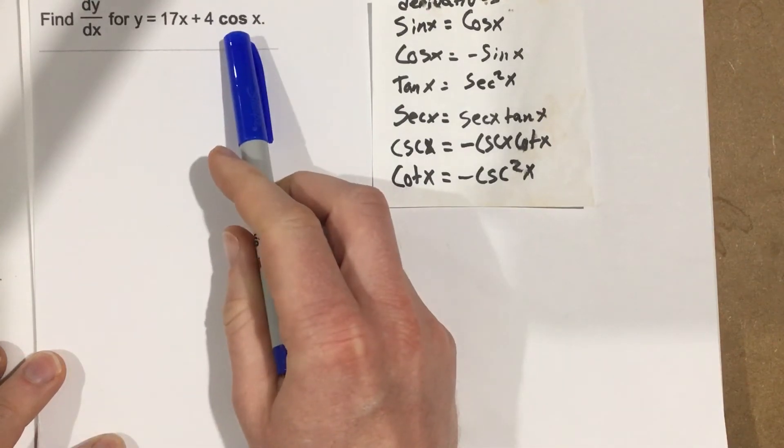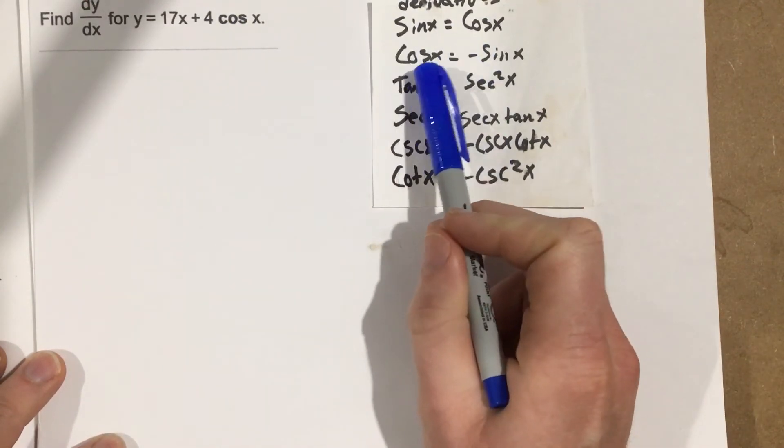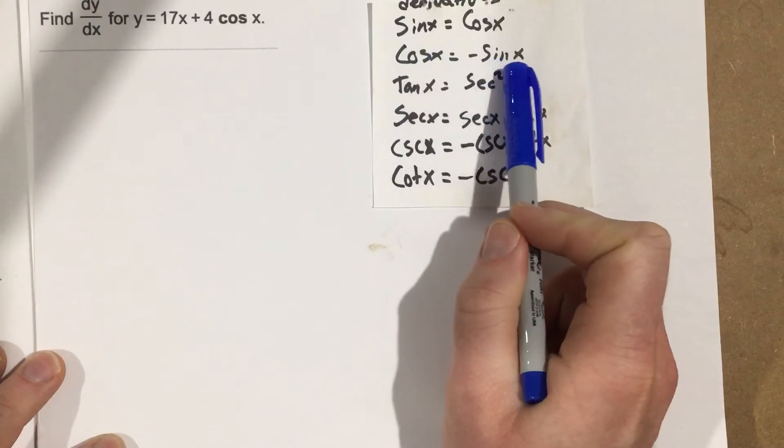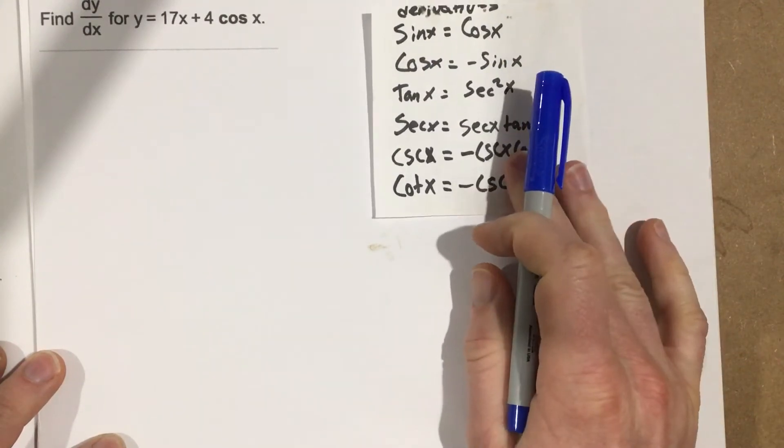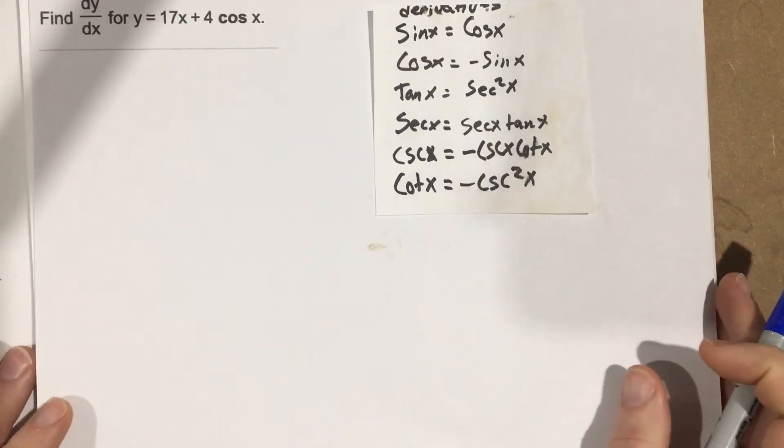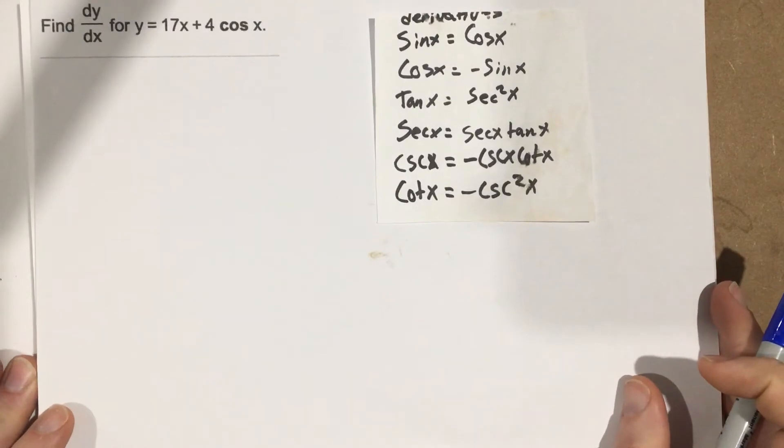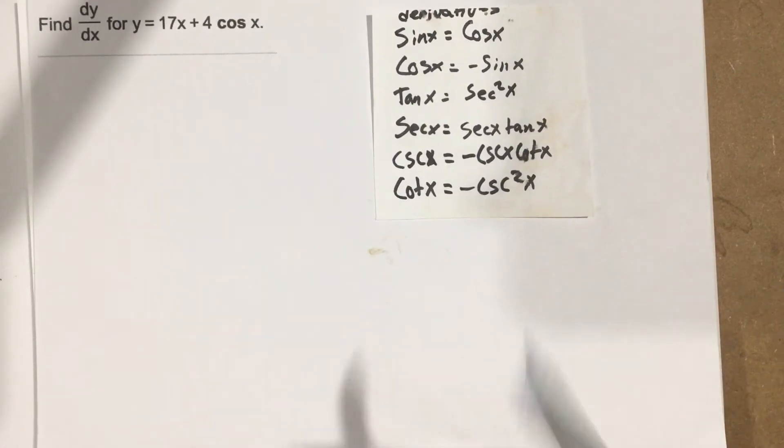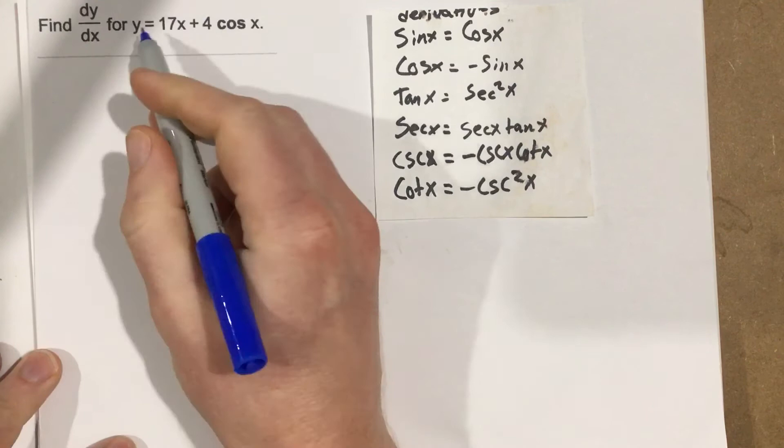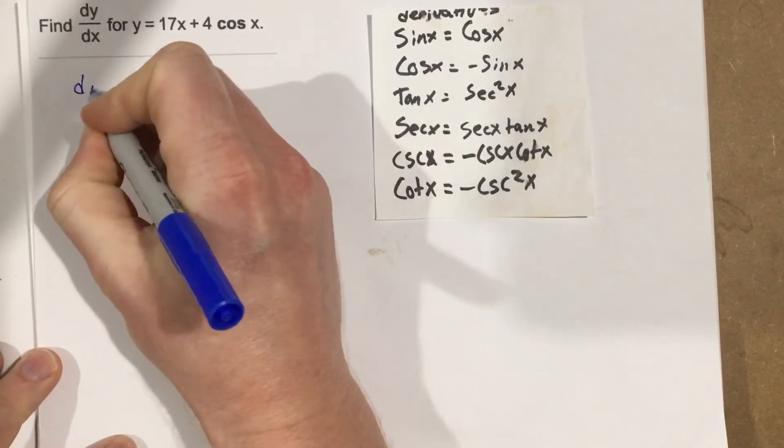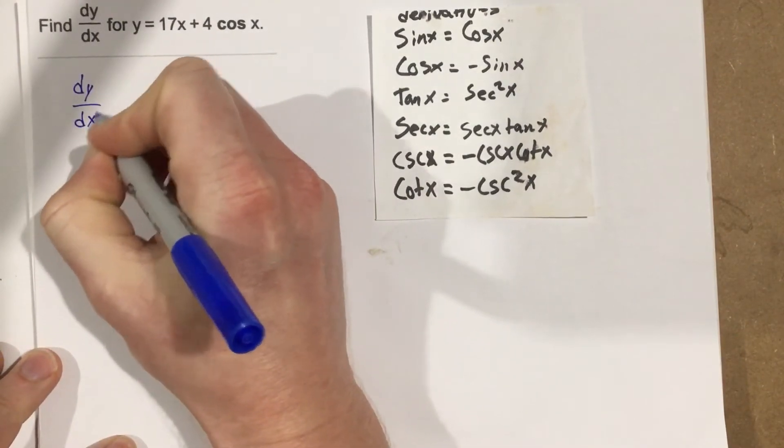In our case we have cosine x, so we're going to see that the derivative of cosine x is negative sine x. We're going to go ahead and start by taking this function, writing the function y as the derivative, so dy over dx is going to equal...